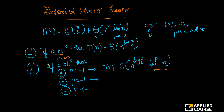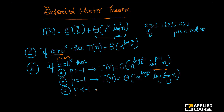Case 2b: if p is equal to minus 1, then T(n) is theta of n^(log_b(a)) · log(log(n)). Case 2c: if p is less than minus 1, then T(n) is theta of n^(log_b(a)). So when p is less than minus 1, the solution is the same as Case 1.